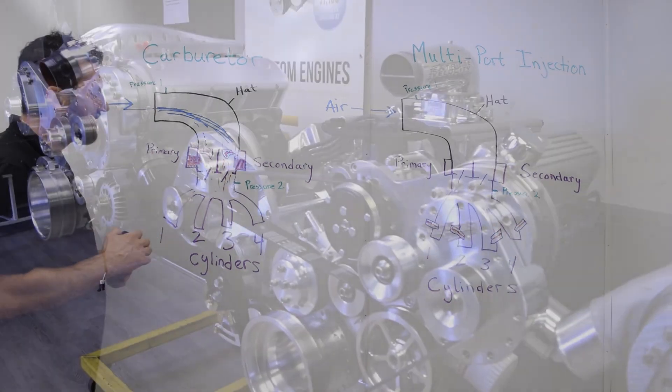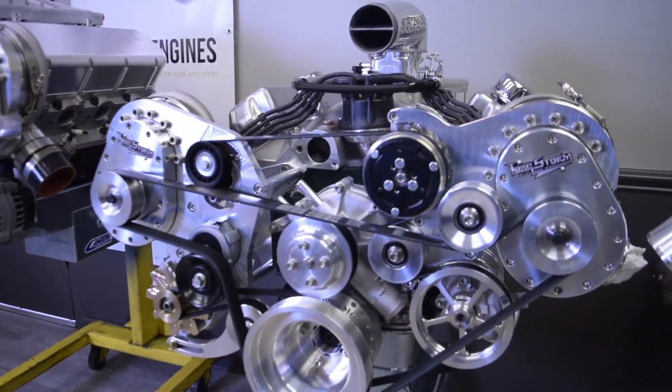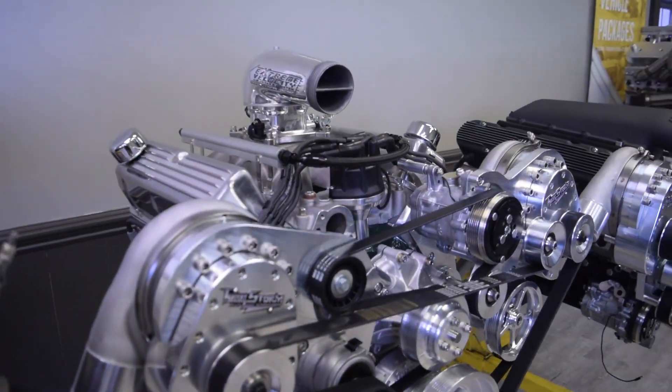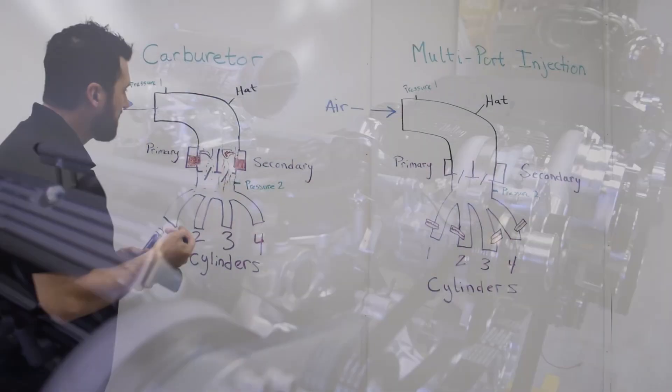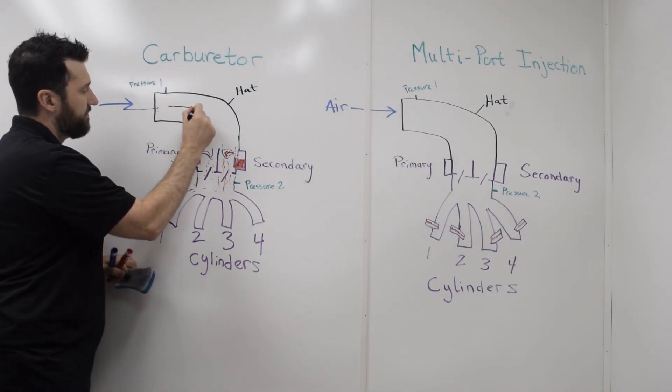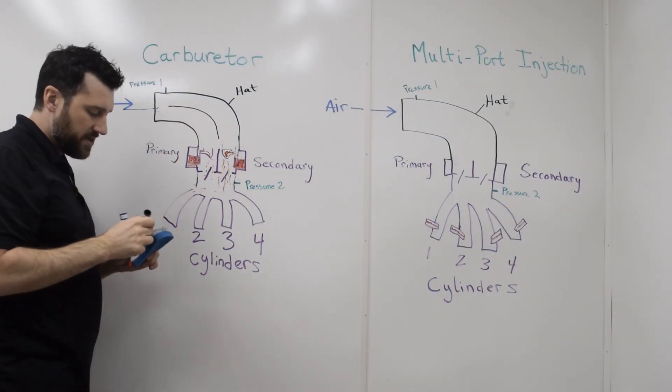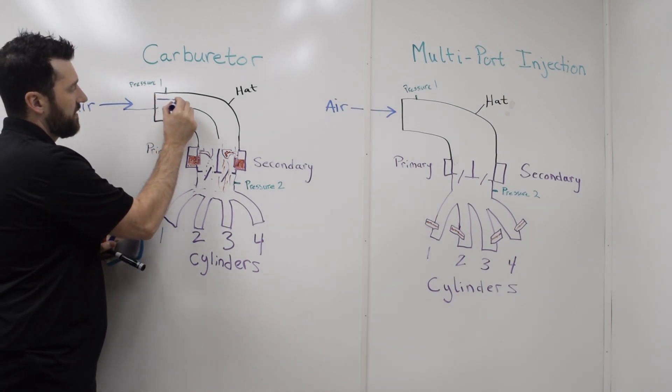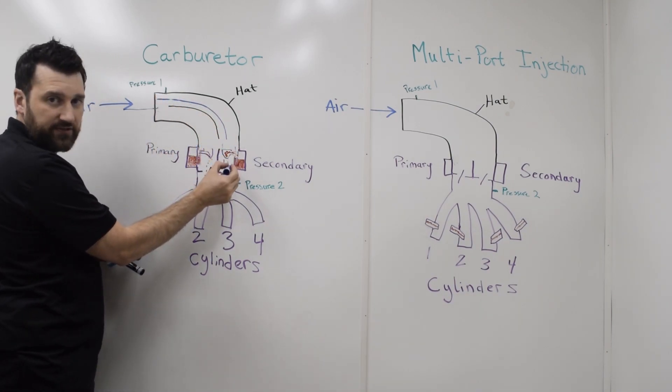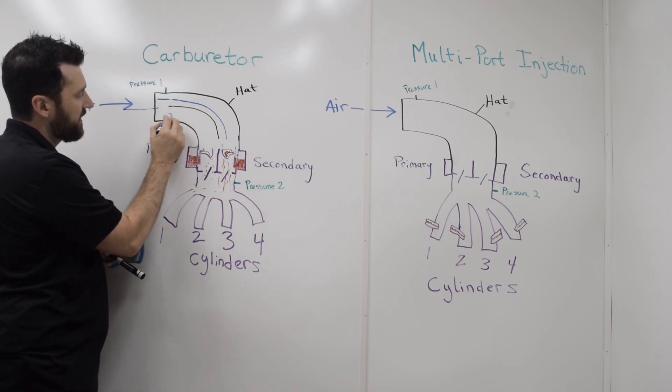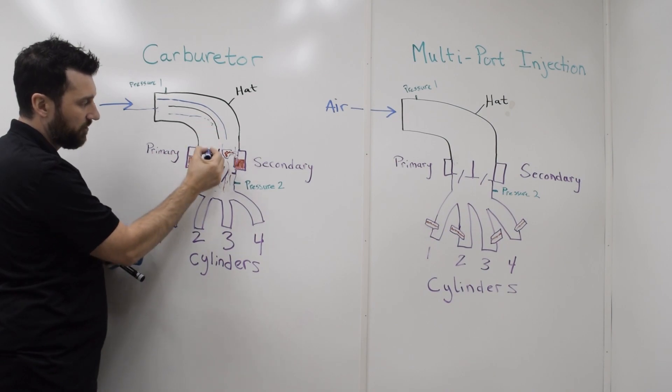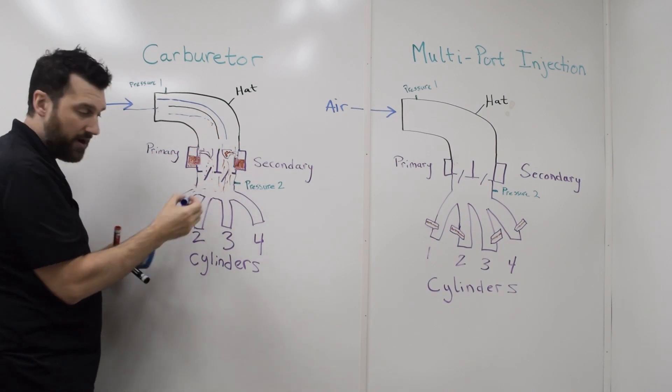To combat that, they've added in a divider into this hat. By putting in this divider, it tries to separate the air. Some of it comes and follows this path down the secondaries, and some of it comes down this path, runs into the divider, and is more likely to be fed into the primary side.